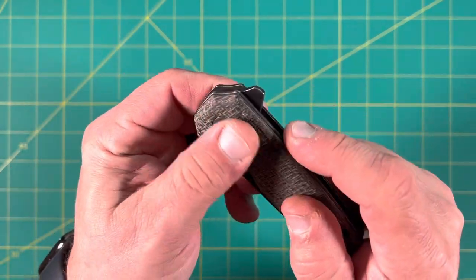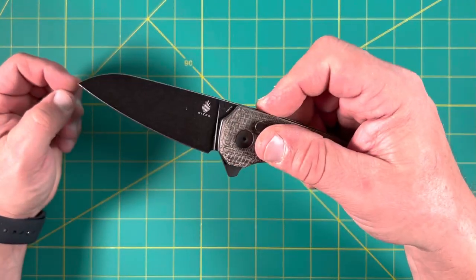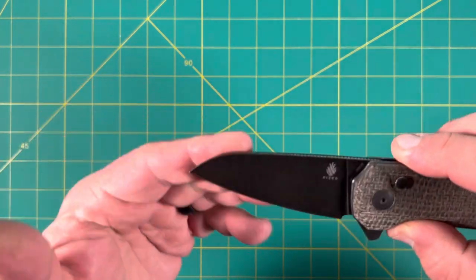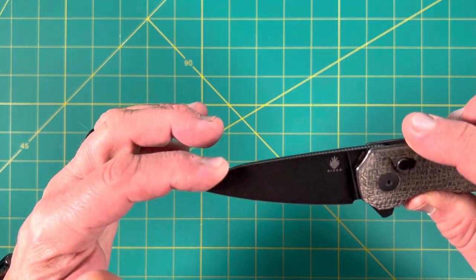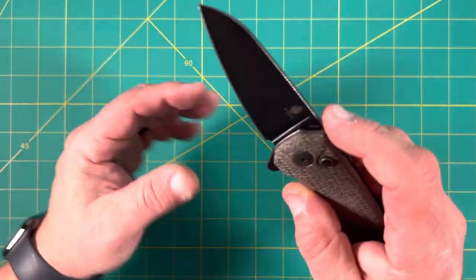And it is a flipper and a button lock. So let's give it a try. There we go. Now, this is a Wharncliffe or a sheep's foot. I think this looks more like a sheep's foot to me with the curve in there and the belly.